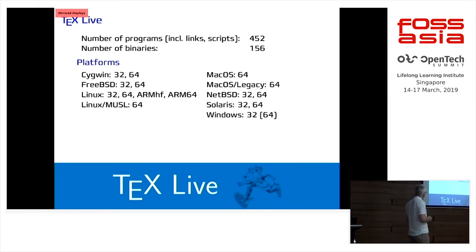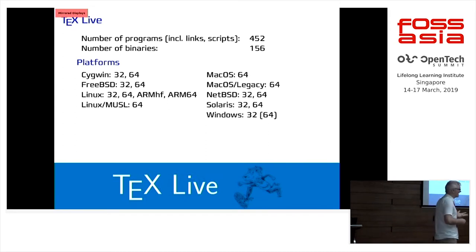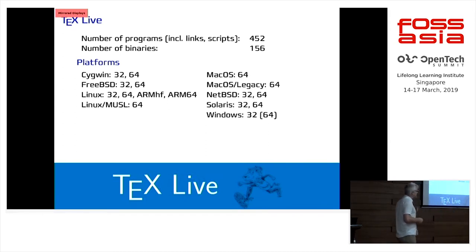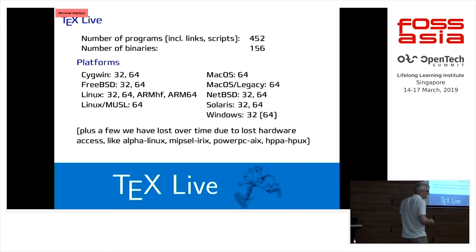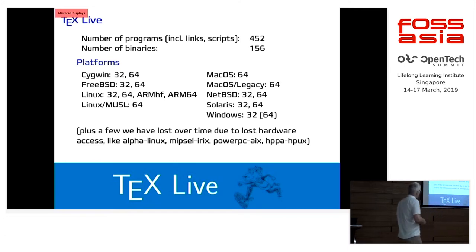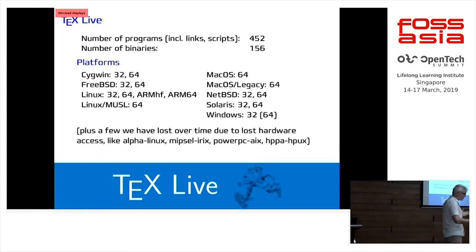So: Cygwin on both 32 and 64-bit, FreeBSD, Linux on all kinds of architectures, Linux musl used by Alpine — recently becoming more popular — macOS, NetBSD, Solaris, Windows. I haven't even listed all those who have died away in the last few years because we lost access to the hardware. We had — I started getting involved in TechLive by building Alpha Linux, Linux binaries for TechLive on the Alpha architecture. Also HPPA, HP. That is what we are talking about — we are distributing this for all of them.